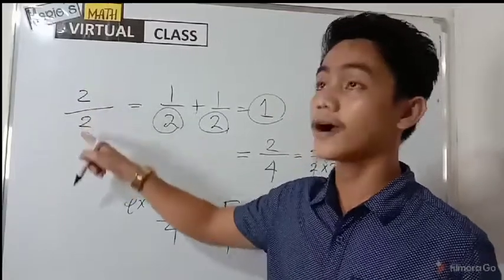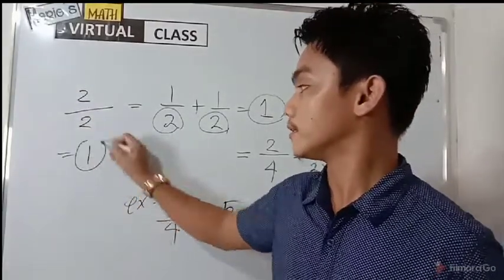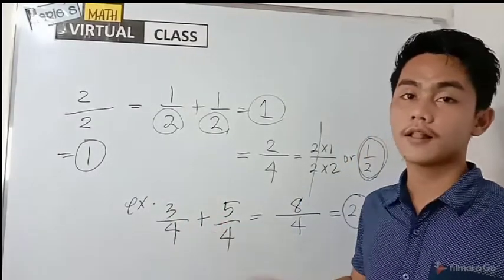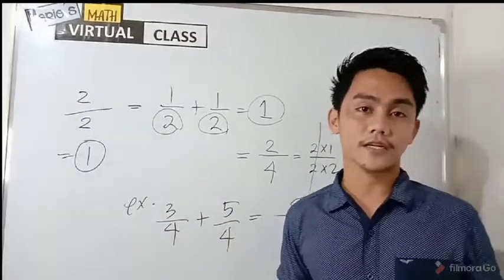And two divided by two, or two-halves, is equal to one. That's the main reason why one-half plus one-half is equal to one, following the rule of adding and subtracting fractions.